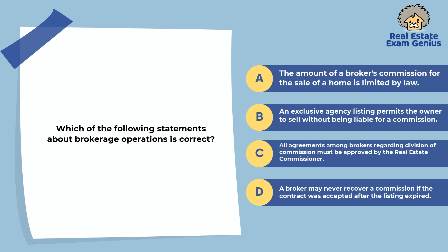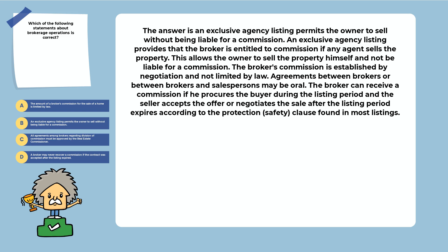Which of the following statements about brokerage operations is correct? The amount of a broker's commission is limited by law; an exclusive agency listing permits the owner to sell without being liable for a commission; all agreements among brokers must be approved by the real estate commissioner; or a broker may never recover a commission if the contract was accepted after the listing expired. The answer is: an exclusive agency listing permits the owner to sell without being liable for a commission. This allows the owner to sell the property himself without owing a commission. The broker's commission is established by negotiation and not limited by law. The broker can receive a commission if he procures the buyer during the listing period per the protection clause found in most listings.